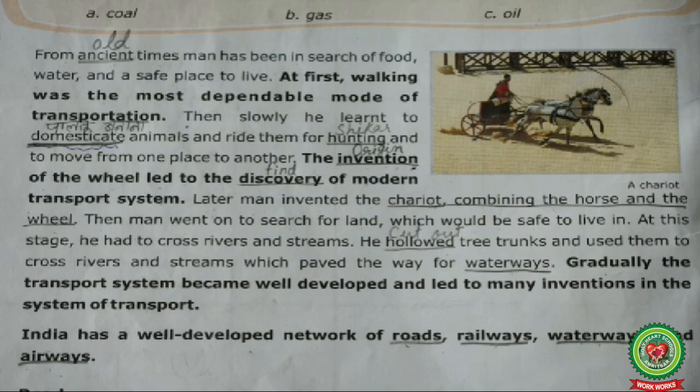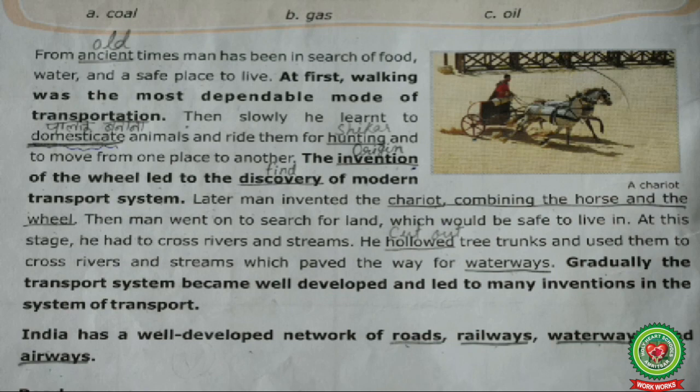Move to the next line. Reading: 'Then slowly he learned to domesticate animals and ride them for hunting and to move from one place to another.' Underline 'domesticate' and write 'paltu' (tame). In the same line, underline 'hunting' and write 'shikar'. These lines mean that with human development, men learned to domesticate animals.